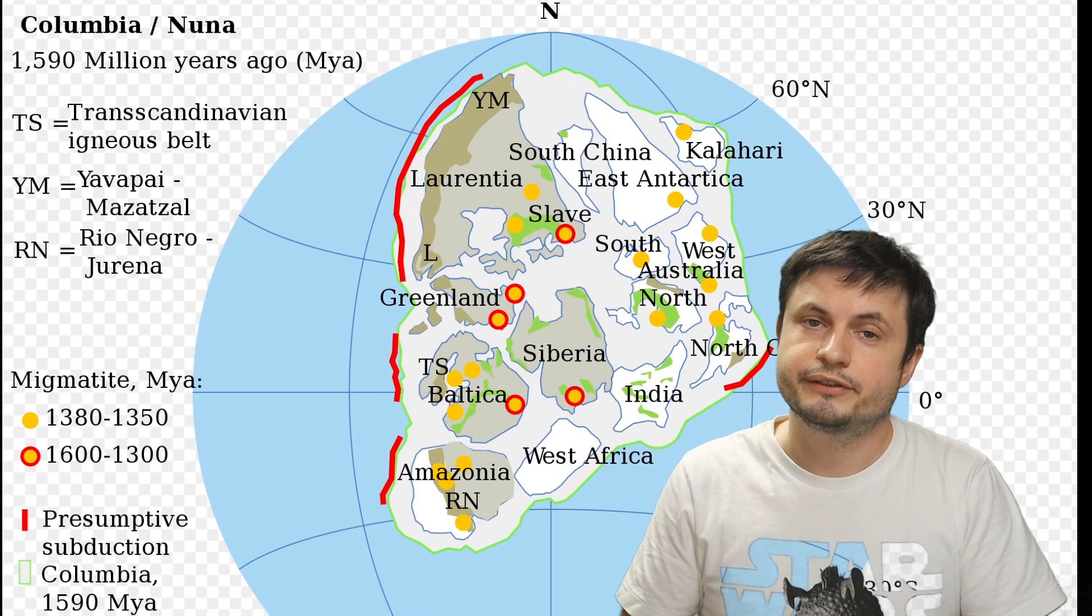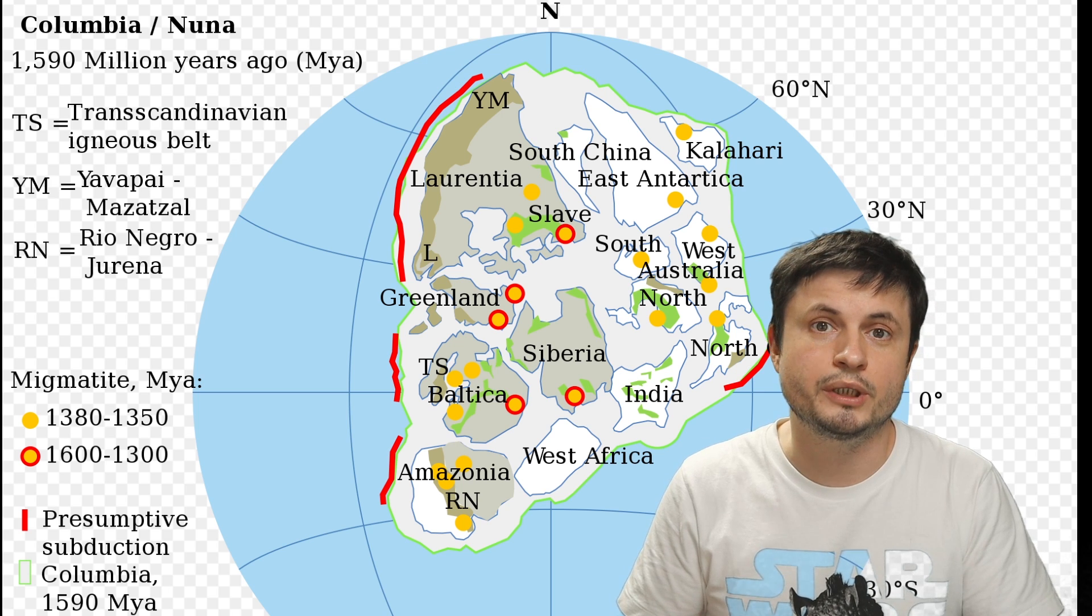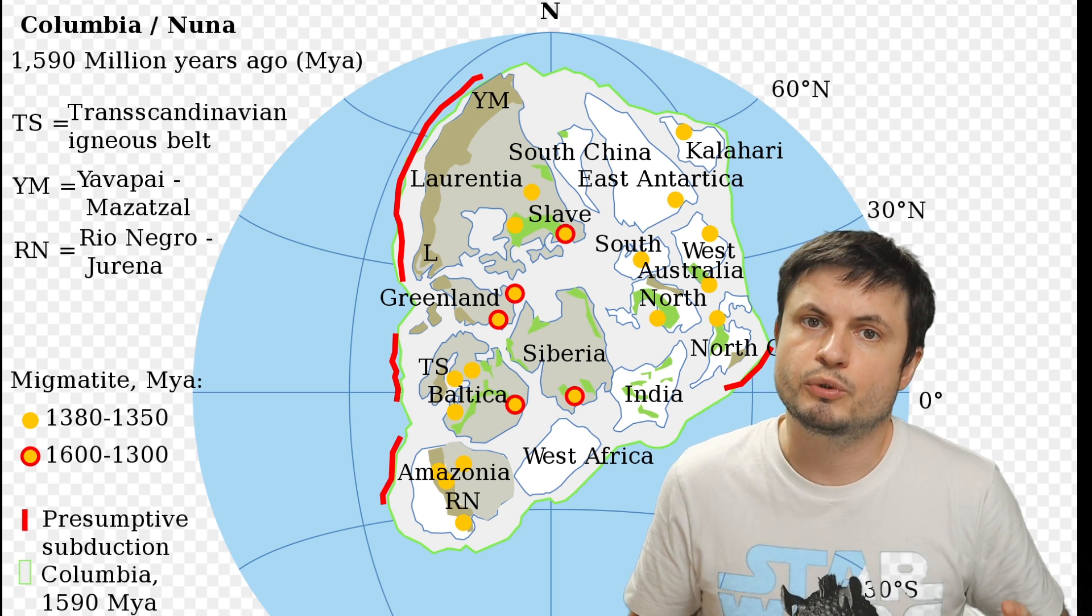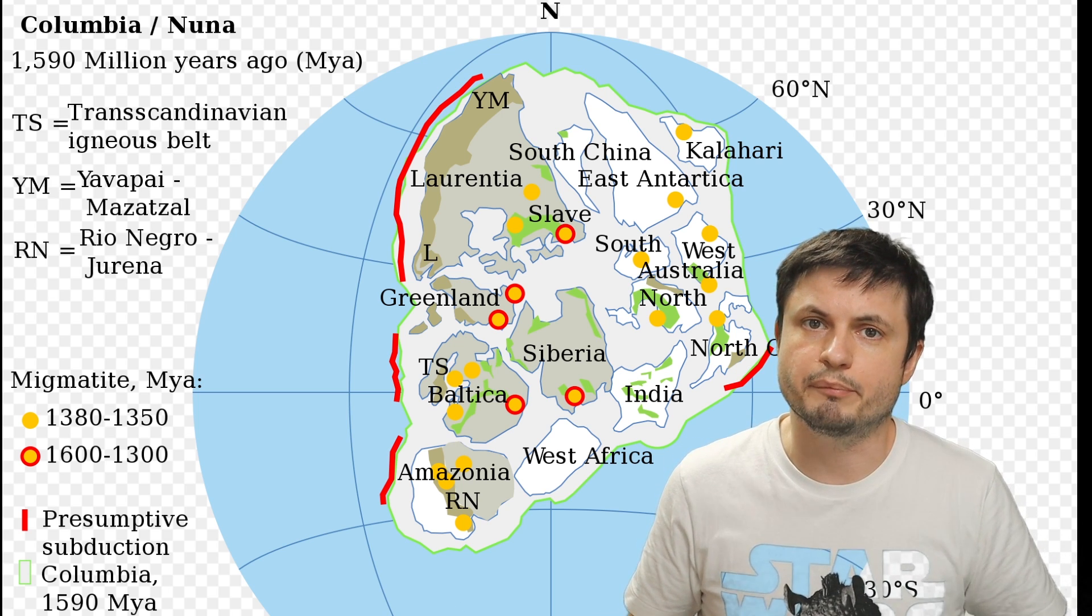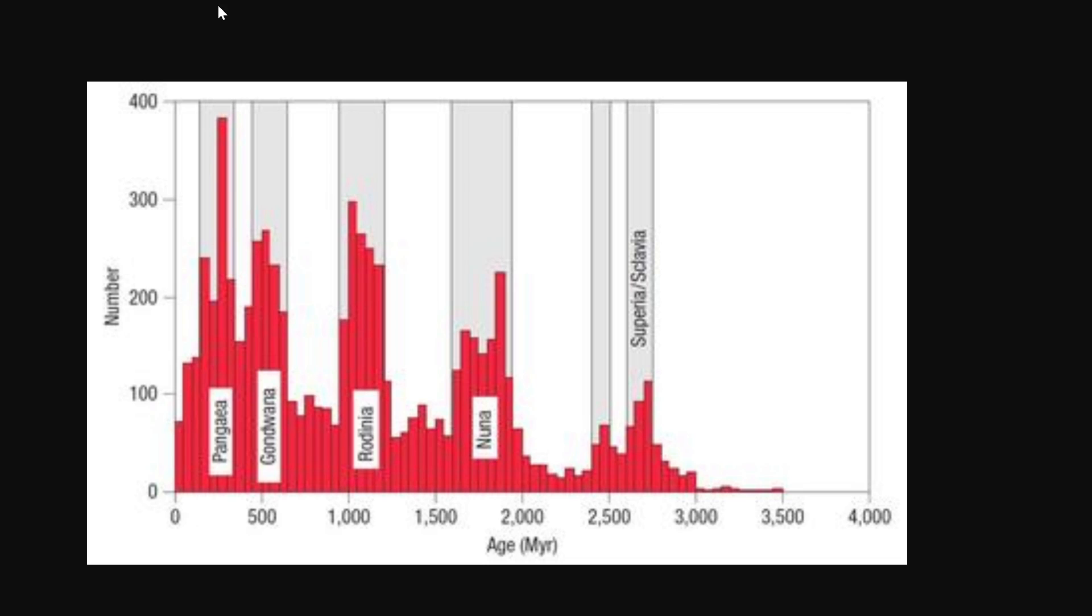But interestingly prior to this about 1.5 billion years ago there was another supercontinent that we refer to as Nuna or Columbia. So there's a kind of a cyclical nature to them and they do seem to happen every few hundred million years. And with the last one being about 200 million years ago the next one will probably happen in approximately 200 million years from now. Here's a general time frame of each of these supercontinents as they appeared on the surface of our planet.